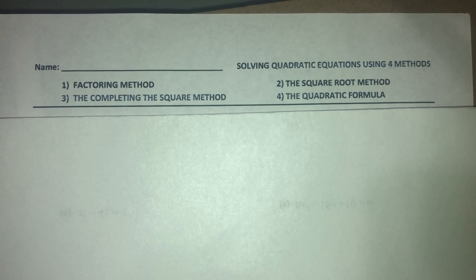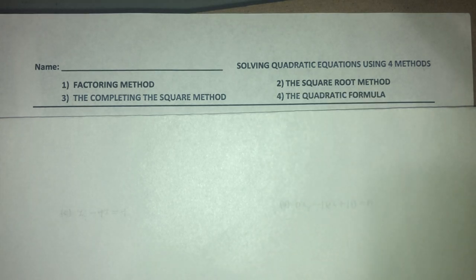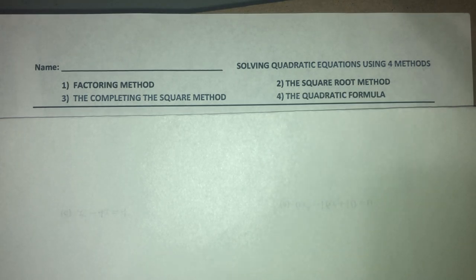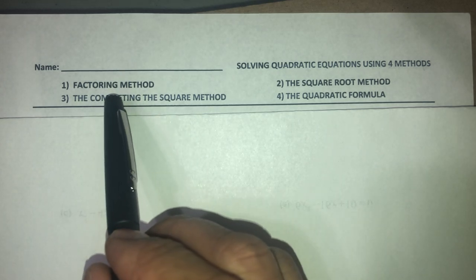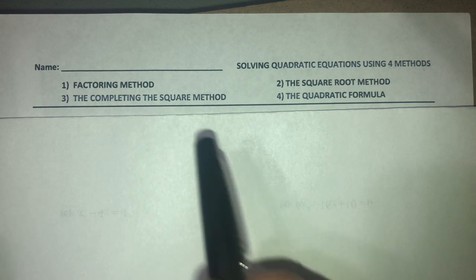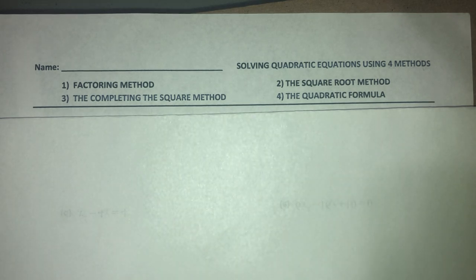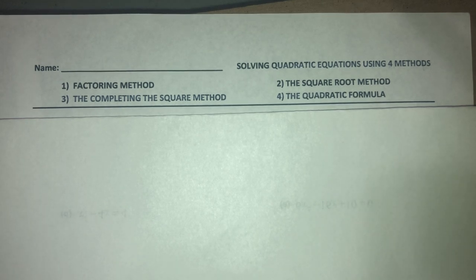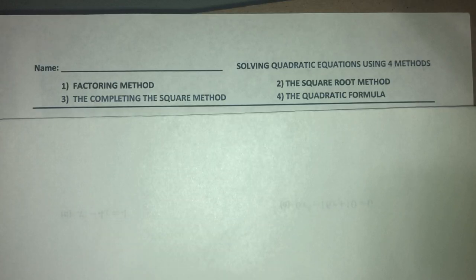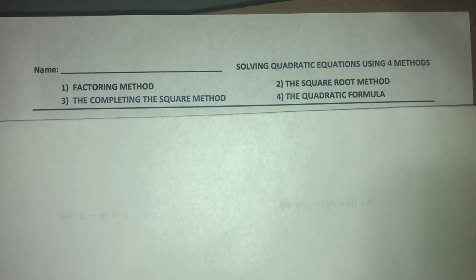The topic we're doing is solving quadratic equations using four methods. These are all the methods that we have learned on how to solve quadratic equations. The first method is factoring — the double bubble, zero equal to zero, T-chart. Then the square root method for incomplete quadratics. We also did completing the square and quadratic formula — that's the fourth method we've learned.